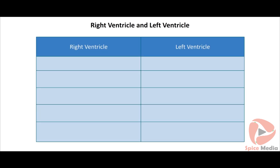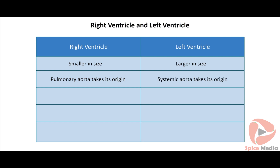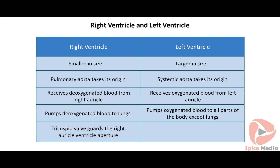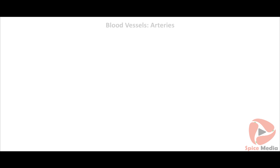The right auricle pumps blood into the right ventricle; the left auricle pumps blood into the left ventricle. The right ventricle is smaller in size than the left ventricle. The pulmonary aorta takes its origin from the right ventricle, and the systemic aorta takes its origin from the left ventricle. The tricuspid valve guards the right auriculoventricular aperture, and the bicuspid valve guards the left auriculoventricular aperture.